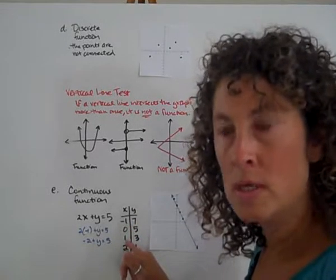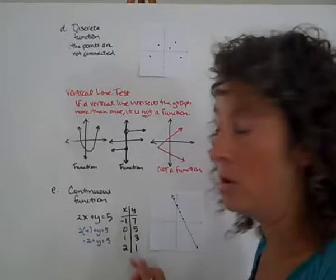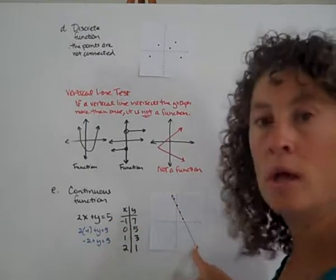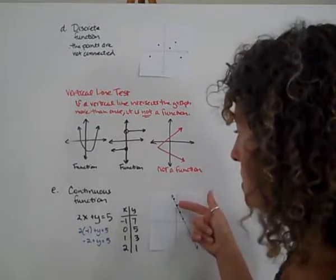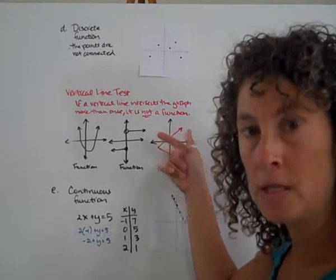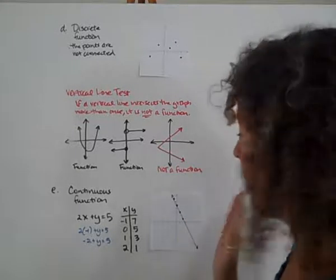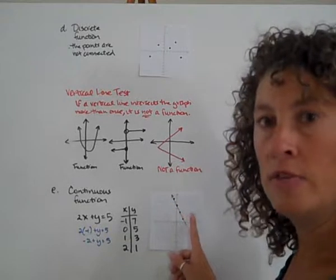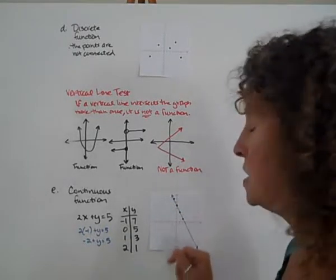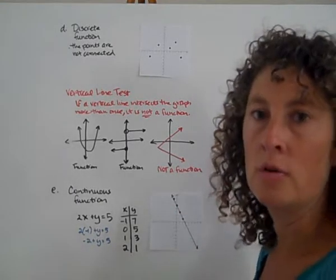Since these aren't the only points that make this equation true, these are just the ones I used to find the pattern, I need to draw a line to represent all of those other points. This is continuous because these points continue to the left and they continue to the right. This is a function because if you remember our vertical line test, if I draw a vertical line and follow along here, at no point does my vertical line ever touch 2 points on that graph.